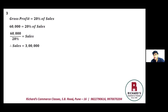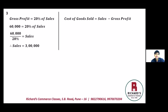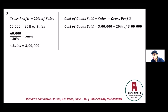The next ratio we can use is inventory turnover, but to calculate that we first need cost of goods sold. Cost of goods sold equals sales minus gross profit. Sales is three lakhs and gross profit is 20% of three lakhs, which is 60,000. So cost of goods sold equals three lakhs minus 60,000, which is two lakh forty thousand.